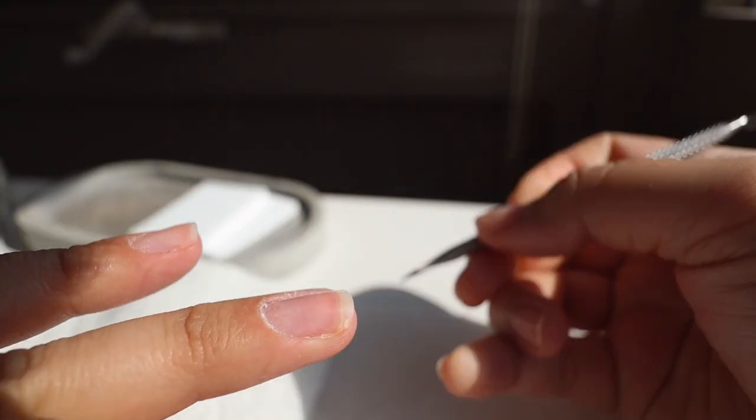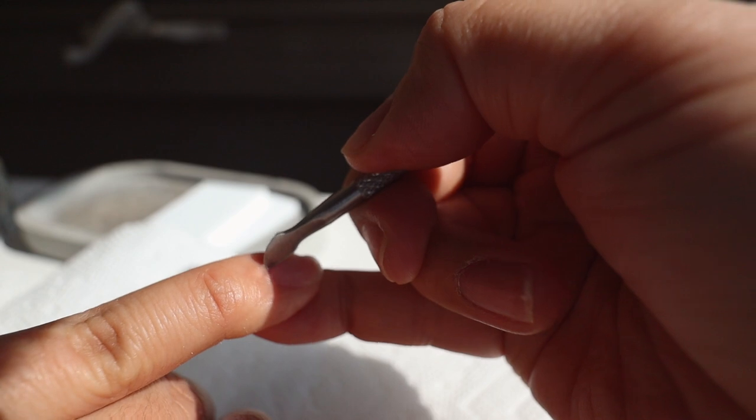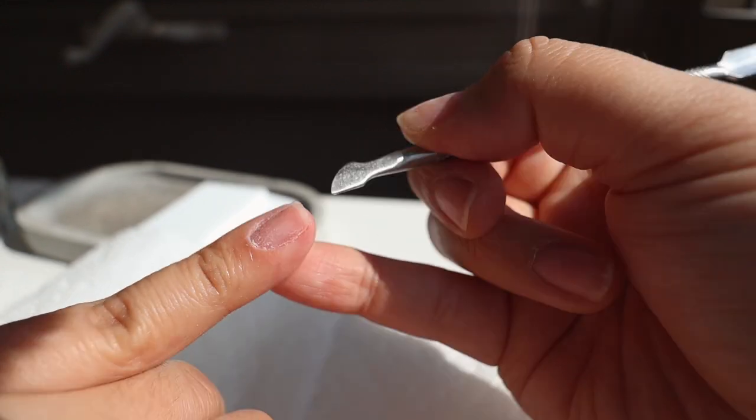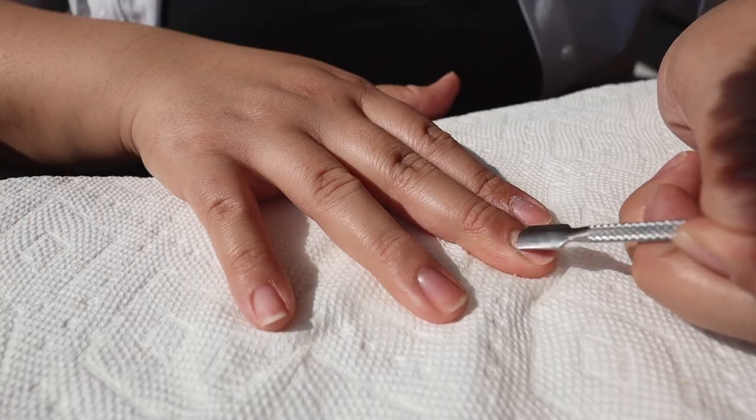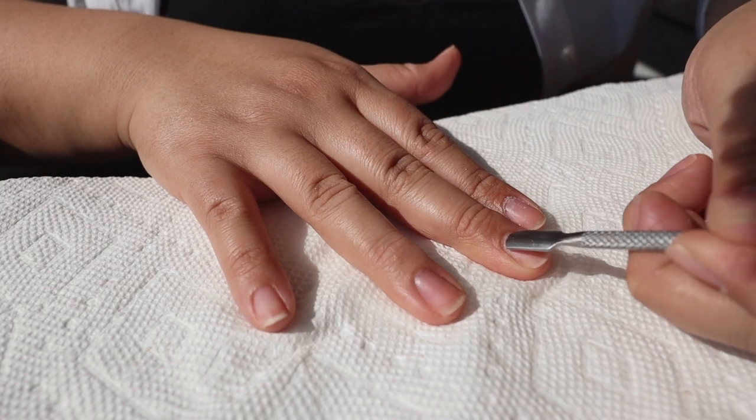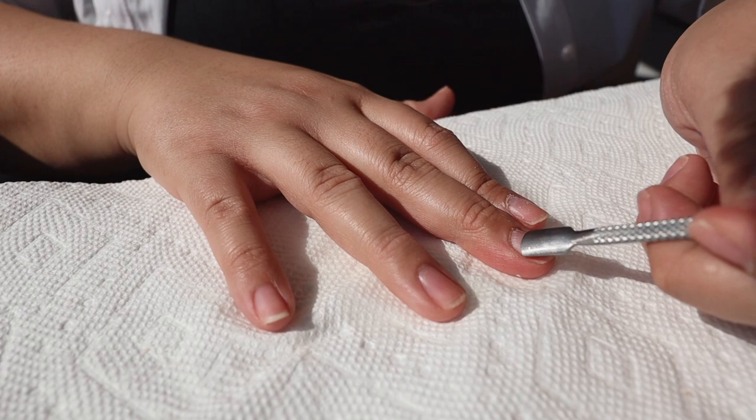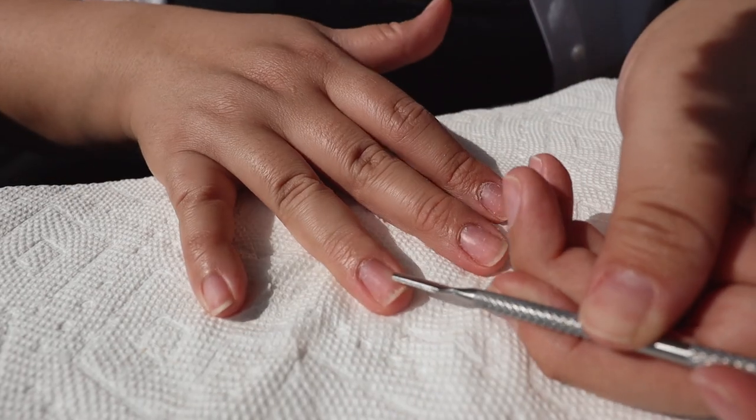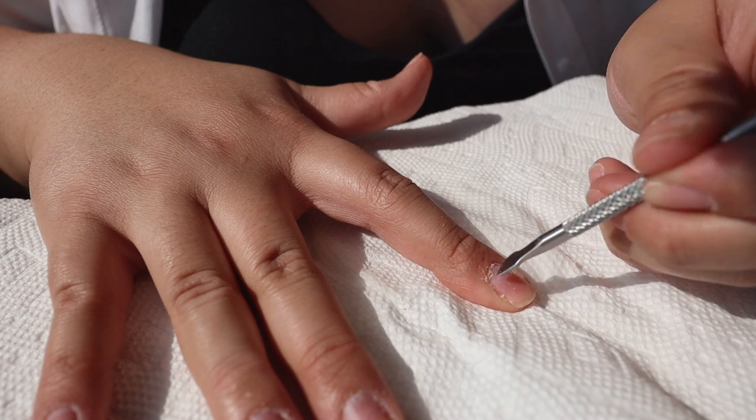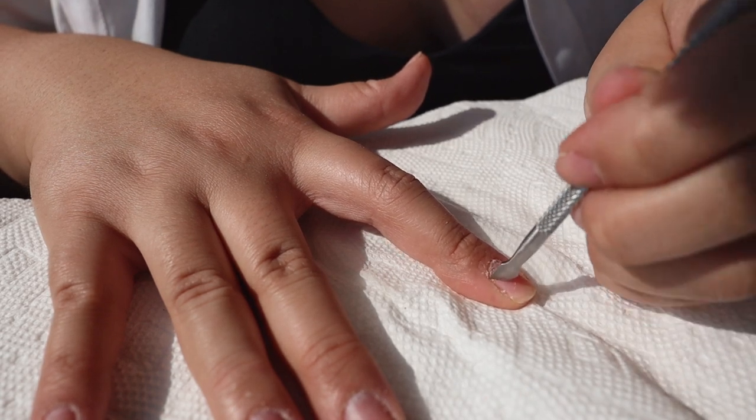You also want to make sure that you're not only pushing back your cuticles, but you're also scraping off any dry skin or cuticle that might be on the sides of your nails as well. And then I cleaned my nail beds using an alcohol wipe. Using the other side of the cuticle pusher, I cleaned under my nails and made sure to scrape up any leftover cuticles that might be on my nail beds.